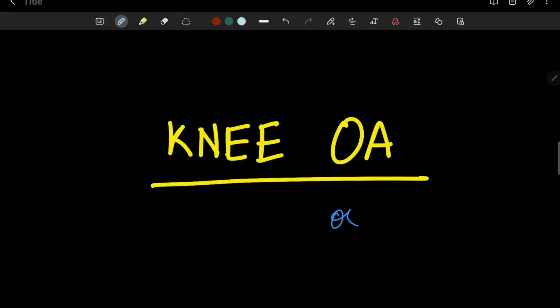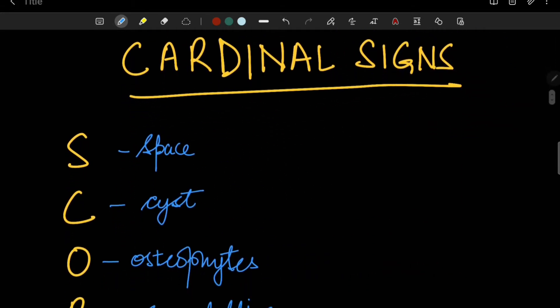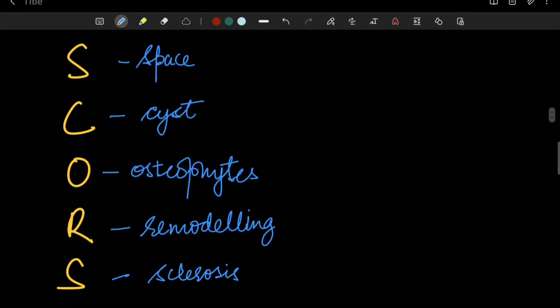Knee OA, short for osteoarthritis. We will learn about the cardinal signs and the Kellgren and Lawrence grading of knee osteoarthritis. The cardinal signs can be learned using the mnemonic SCORS: S-C-O-R-S.